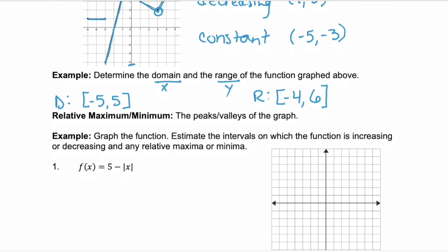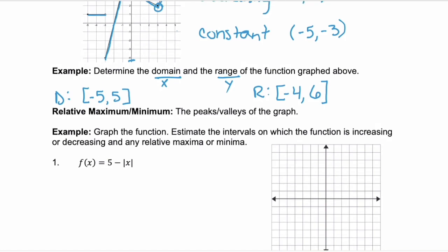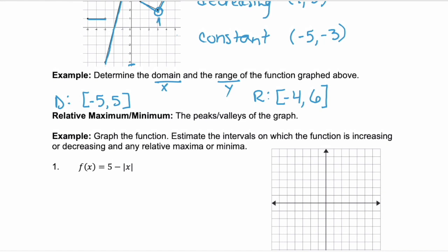Now some graphs, we're going to see these relative maximum or minimums. These are the peaks or the valleys of the graph. Above, we saw that we had this relative minimum at 3. So when x is 3, we have a minimum.